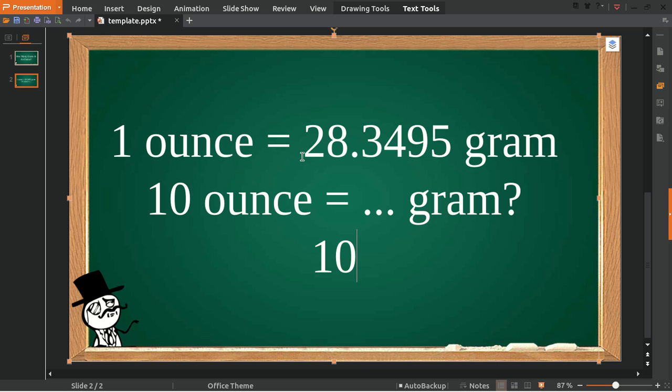Let's answer this question. The first thing that I need to do is put 10 and multiply it with one ounce because this is ounce, and then put an equal sign.